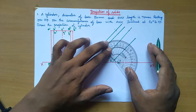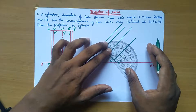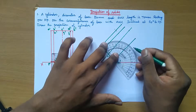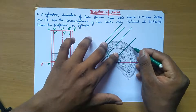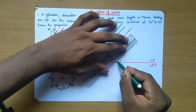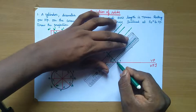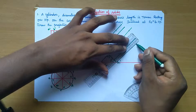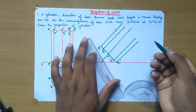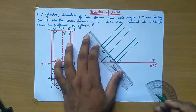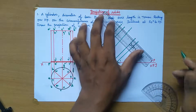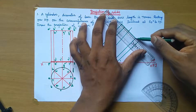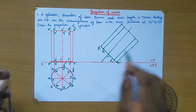Take measurement of T', take 90 degrees, and draw a line of 70 mm axis length. Now draw the projector lines and join all the points.